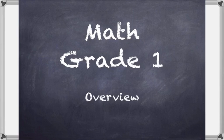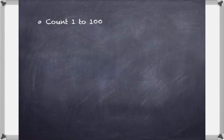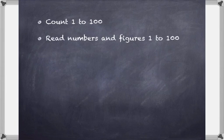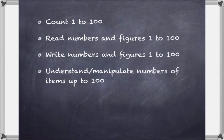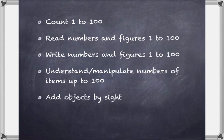Just to hit some of the highlights of what will be covered as they go through the lessons: we'll be counting the numbers 1 to 100, reading numbers in figures 1 through 100, writing numbers in figures 1 to 100. The student will understand and manipulate numbers of items up to 100. They'll be adding objects by sight using pictures and visual things to demonstrate numbers of objects and get the idea visually and with manipulative objects of the number of things.